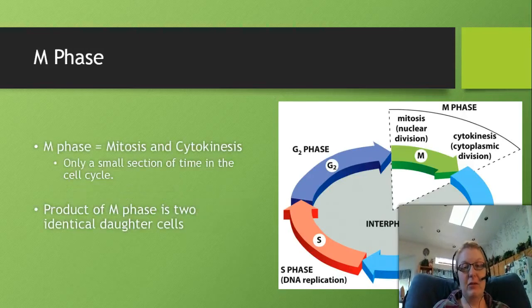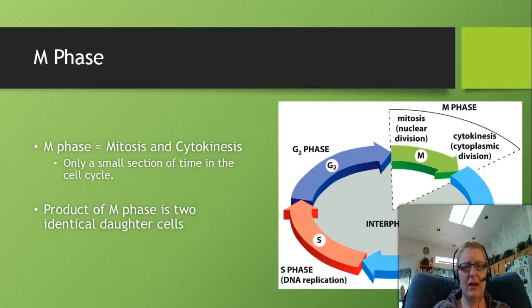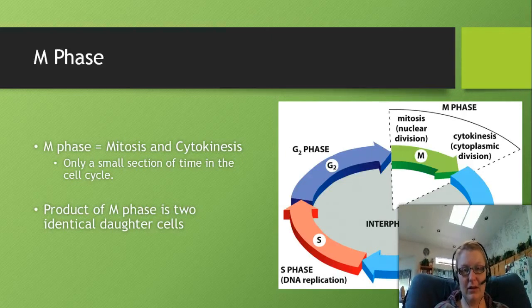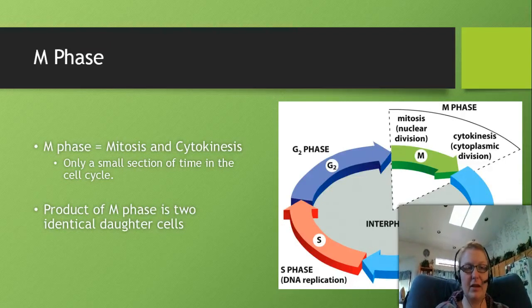The M phase is mitosis and cytokinesis - both of these processes. It occurs for only a very small section of time, happening really quickly, and it goes through the phases we'll review in Topic 2. The product of M phase is two identical daughter cells. The next topic is dedicated entirely to the M phase.